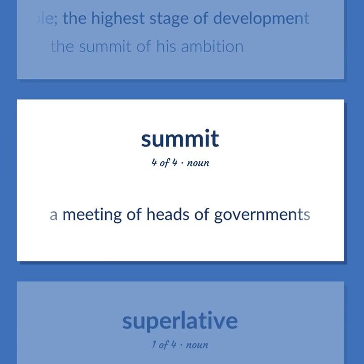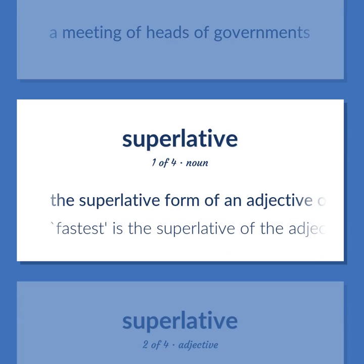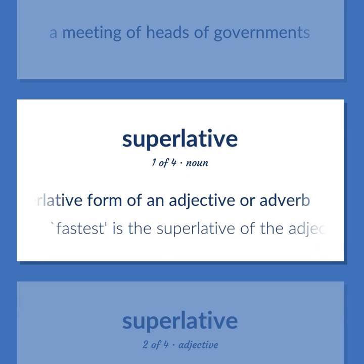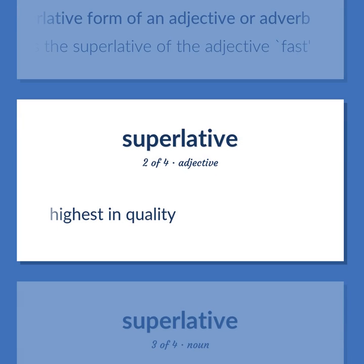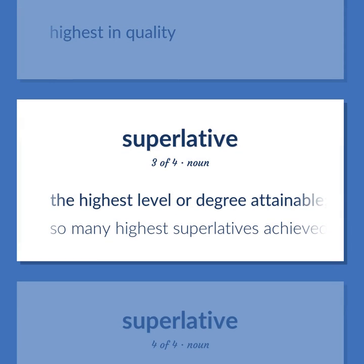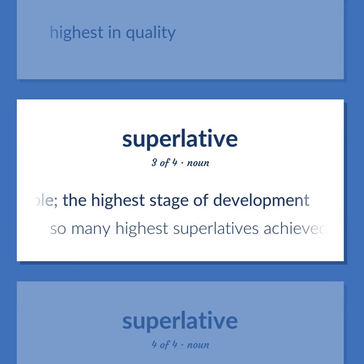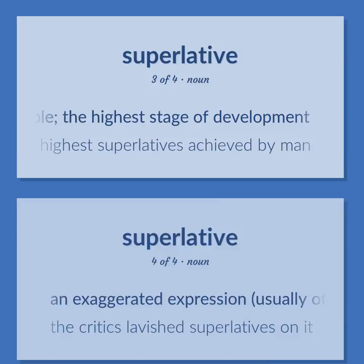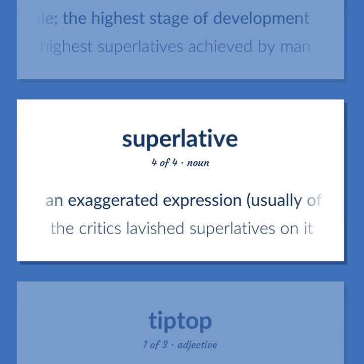Superlative. A meeting of heads of governments. The superlative form of an adjective or adverb. Example: 'Fastest' is the superlative of the adjective 'fast.' Highest in quality. The highest level or degree attainable; the highest stage of development. Example: So many highest superlatives achieved by man. An exaggerated expression, usually of praise. Example: The critics lavished superlatives on it.